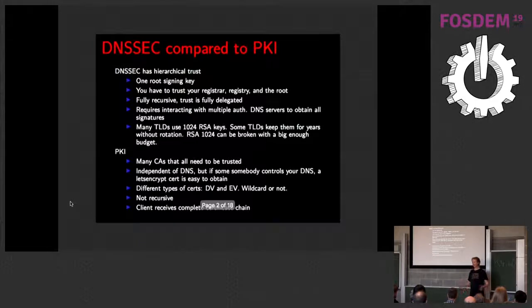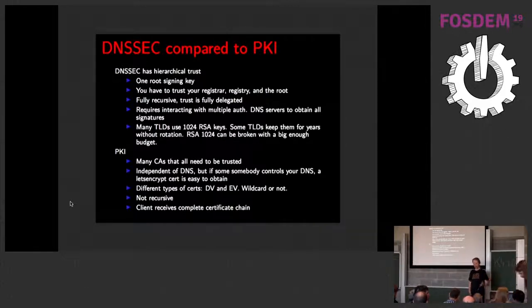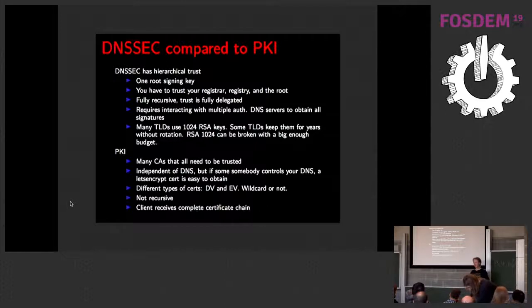I assume people know about DNS and DNSSEC, so I'll skip introductions. I made a comparison slide: how does DNSSEC compare to the current normal PKI system? DNSSEC has one root trust anchor that signs everything — all trust derives from that. Whereas in PKI, you have many independent CAs. The really nice thing from a security point of view of DNSSEC is you have to trust the root, your registrar, and the registry — and basically that's it. With PKI, you have so many independent CAs that can all sign certificates for your domain, so the whole community is constantly verifying CAs.